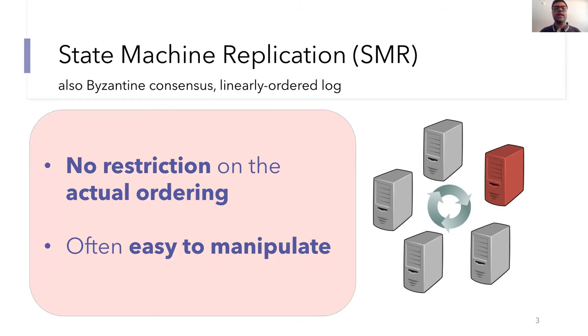But unfortunately, neither consistency nor liveness says anything about the actual ordering of transactions in this log. For example, the consistency requirement can be satisfied even if there's a single adversarial node that completely chooses the ordering of all the transactions. And as it turns out, this transaction ordering is often easy to manipulate in existing protocols.